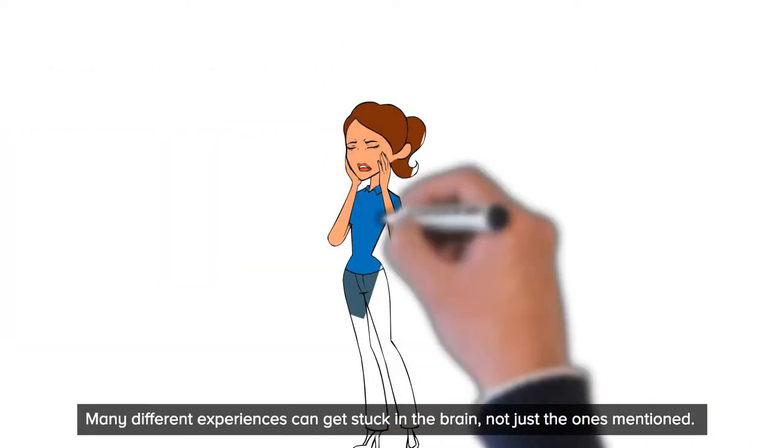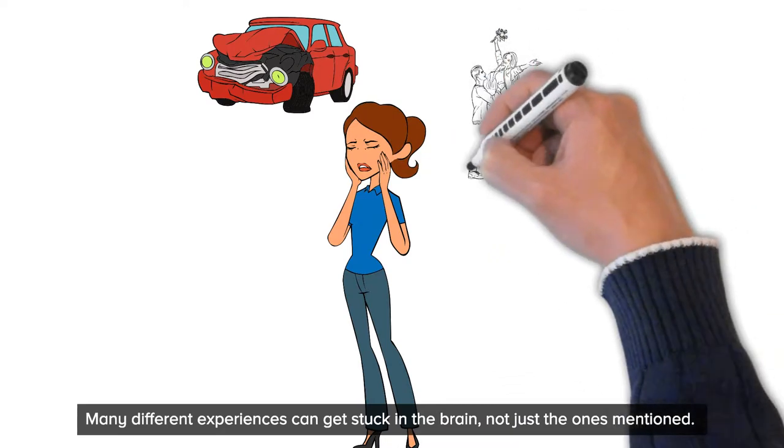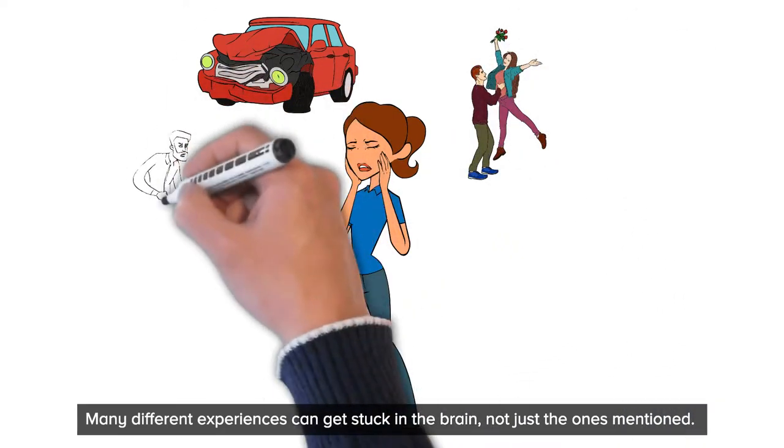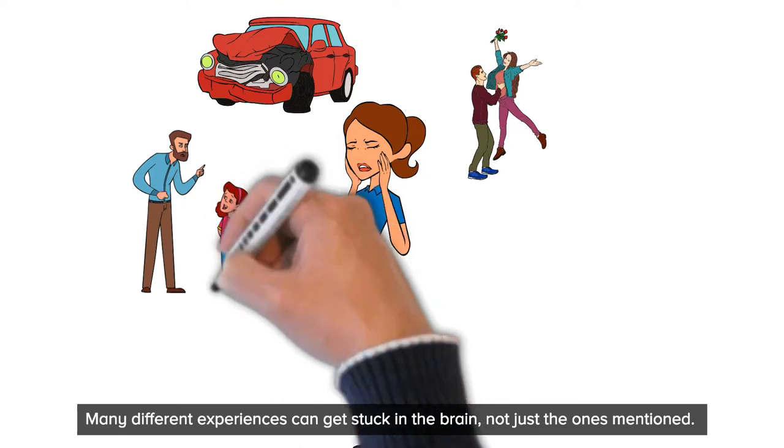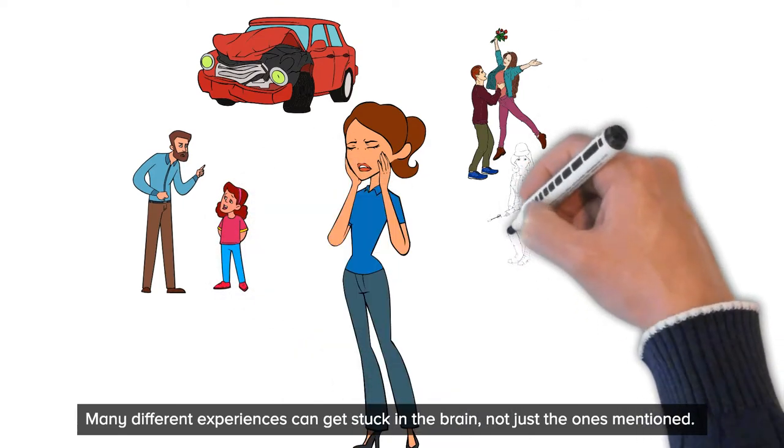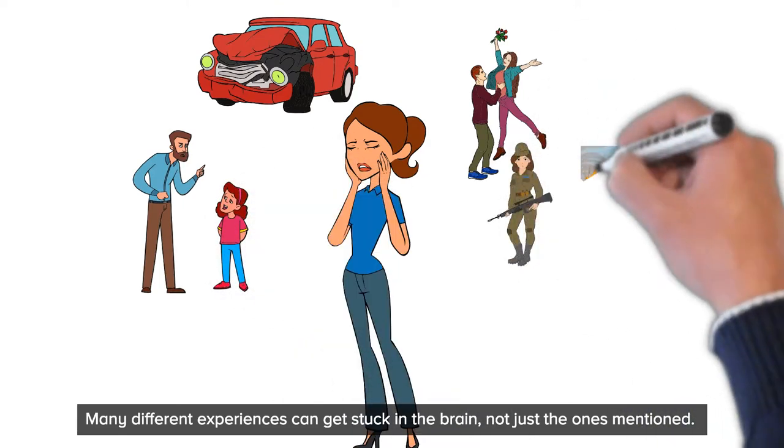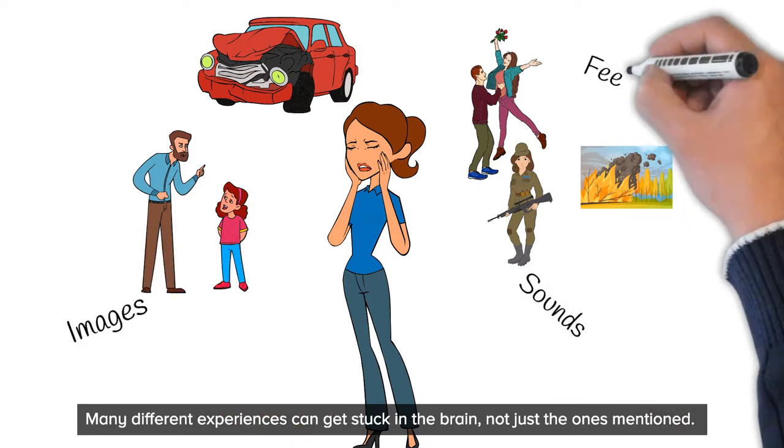Sometimes things happen to us, not because we are bad people, but because things happen in life. Some of those things are maybe car accidents, relationship issues, stuff that happens in childhood, or perhaps a war or natural disasters.